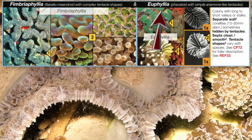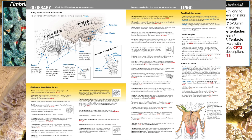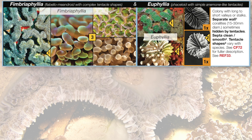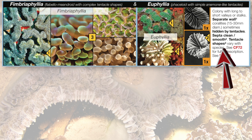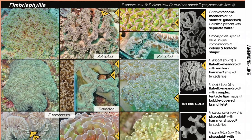A closer look reveals some extra terms coming into play: flabellomeandroid. Let's take a quick trip to the glossary. Tentacle shapes vary with species — but where are the species? Well, page 72 may help. Let's go there. And here's Fimbriaphyllia in all its glory, including species accounts. So why not on page 13? Well, gentle reader, that's because space truly is the final frontier.